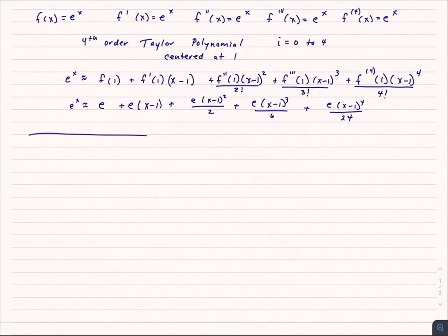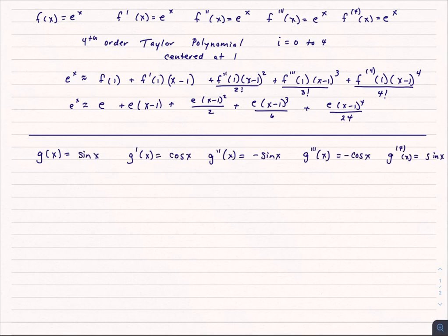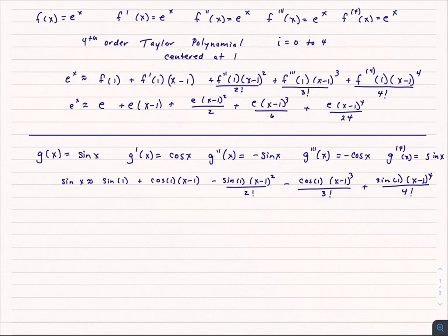We could do the same thing with sine and cosine. Let's go ahead and pick sine and then write its derivatives. All right, those are the derivatives. So we can say that sine of x is approximately equal to all of this. Again, this is centered at 1.